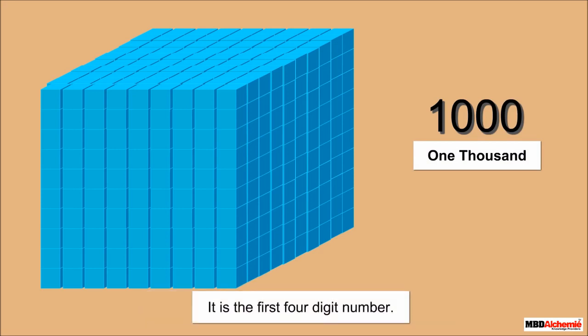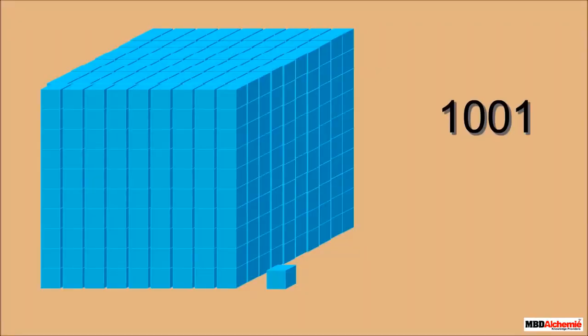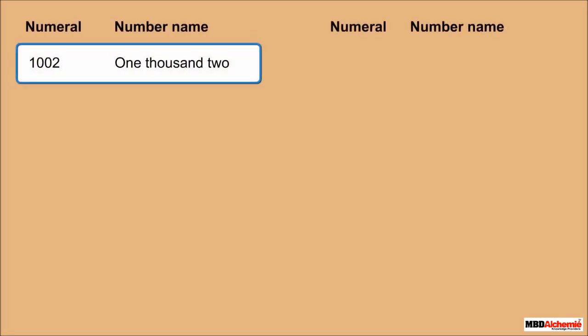Do you know what comes after one thousand? One thousand one comes after one thousand. Similarly, there are many numbers after one thousand. Let's see how to read and write a few of them.